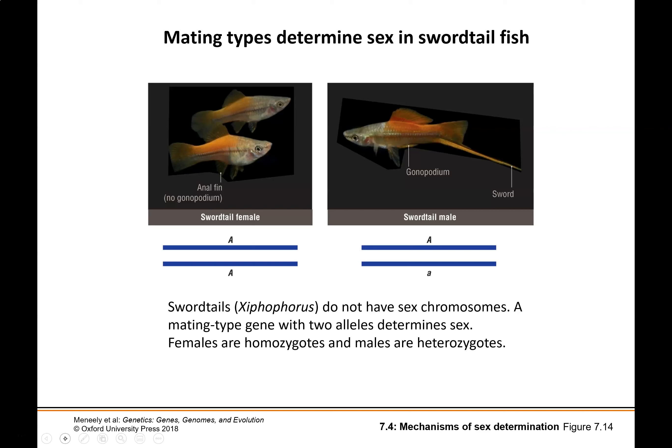There are also situations where there are no sex chromosomes at all. In swordtail fish, there are no sex chromosomes; instead there are essentially alleles that determine sex and they behave like autosomal alleles. Females are the homozygous individuals for the allele and males are heterozygous, so the inheritance tends to resemble an autosomal situation. But males are still in a sense the heterogametic sex — the ones with two different alleles.